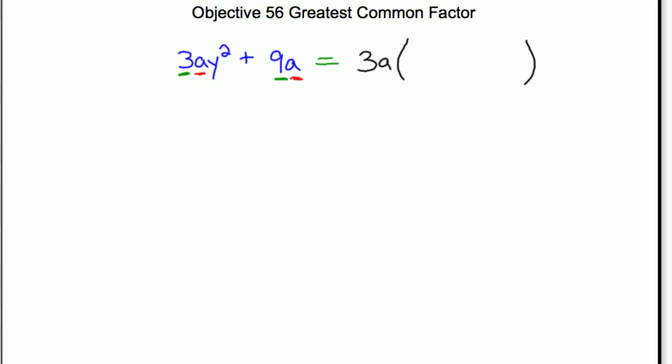We're basically undoing a distributive property here, so we're going to use parentheses to show that. Now when you take 3a out of this 3ay squared, you're just left with a y squared. And if you take 3a out of 9a, you're just left with a 3.